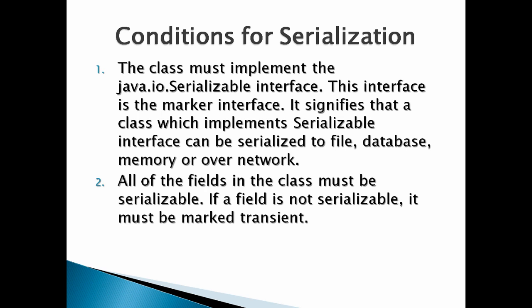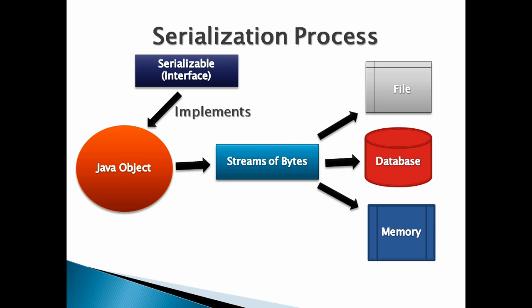All of the fields in the class must be serializable. If a field is not serializable, it must be marked transient. The diagram depicts the serialization process. Here, suppose we have a Java object which we want to serialize — this object must implement java.io.Serializable. Using ObjectOutputStream, we will transform the Java object into a stream of bytes and save the state of the object into a file, database, or memory.